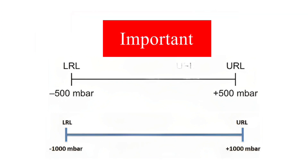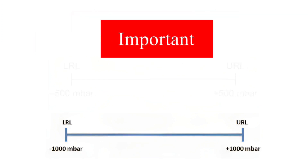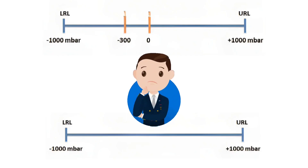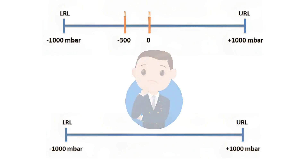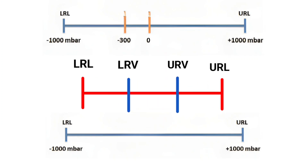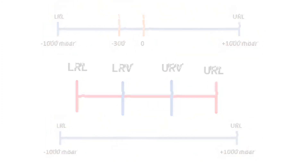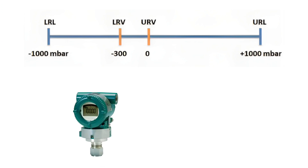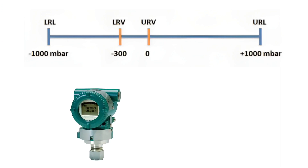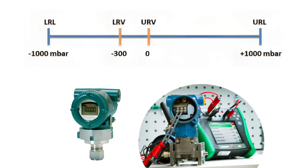One important point to keep in mind: between LRL and URL, we can provide a range to the transmitter according to our application. These include LRV and URV — the values on which we configure any transmitter for measurement.